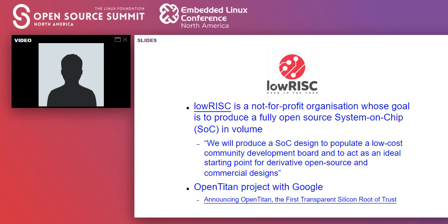One of the first organizations to get going with RISC-V was LowRISC — a not-for-profit based in the UK started by some of the people behind Raspberry Pi, including board member and software developer Andrew Bradbury. The idea was to create an open source system-on-chip usable in something like a smartphone or single-board computer. More recently, they're working with Google on a security processor project called OpenTitan, using a RISC-V core from ETH Zurich.